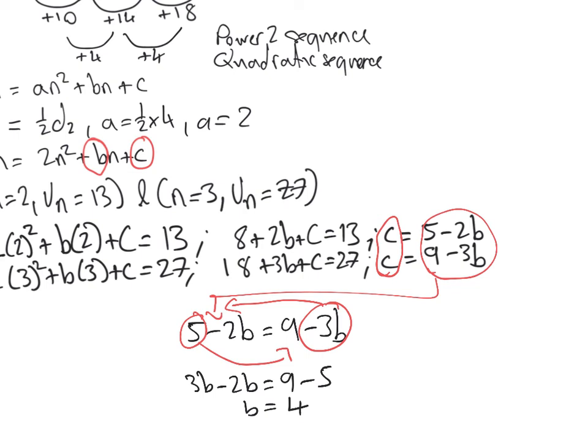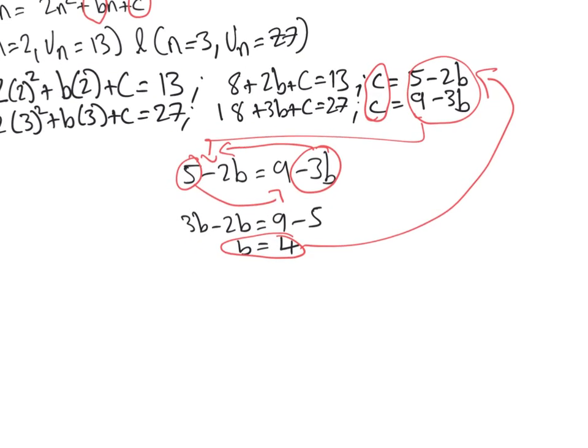So there's our b equals 4. Then we're going to substitute that back in to one of the equations. So b equals 4, doesn't matter which one, pick the easiest one. So we have c equals 5 minus 2 times b, b is 4. So c equals 5 minus 8, which means c equals negative 3.